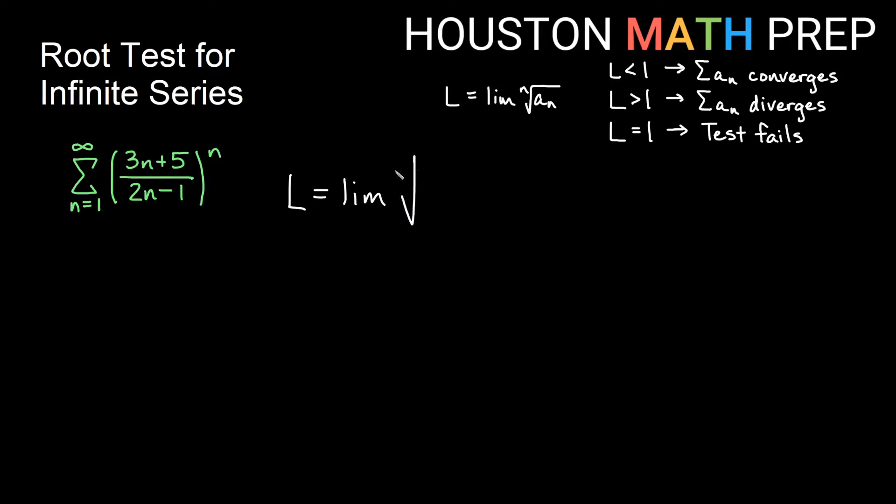So if I'm taking an nth root of (3n + 5)/(2n - 1) to the n, the nth power and the nth root are going to reduce one another, especially if everything's positive. And then we'll simply just get the limit of what was in parentheses to begin with. We'll get (3n + 5)/(2n - 1).